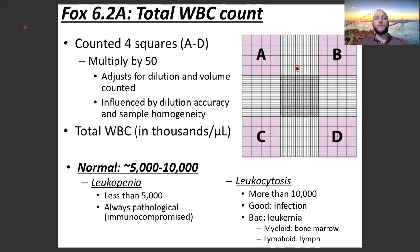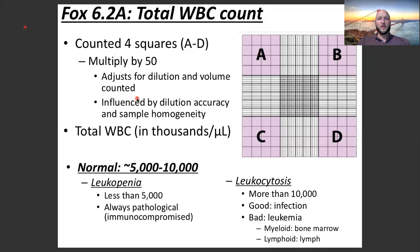For white blood cells, we're counting this big box here — these four shaded-in regions A, B, C, and D. We are then going to multiply by 50 to adjust for dilution and volume. That will give us our total white blood cell count in thousands.